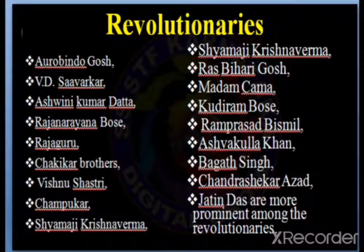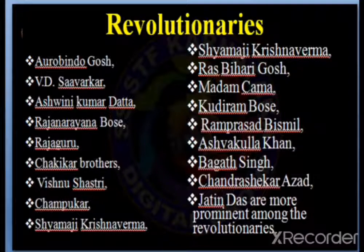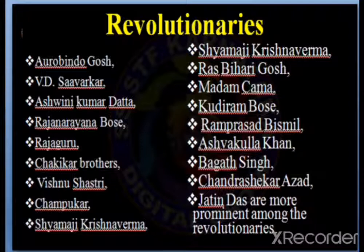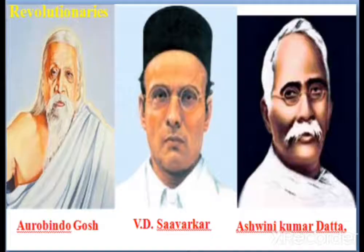The important revolutionary leaders in India included Aurobindo Ghosh, V.D. Savarkar, Ashwin Kumar Datta, Rajanarayan Bose, Rajguru, Chapekar Brothers, Vishnu Shastri Chiplunkar, Shyamji Krishna Varma, Ras Bihari Ghosh, Madame Cama, Khudiram Bose, Ram Prasad Bismil, Ashfaqulla Khan, Bhagat Singh, Chandrasekhar Azad, and Jatin Das — prominent leaders who were part of the revolutionary movement.